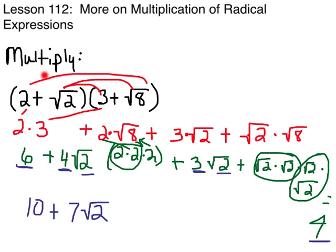So first, we've got 2 times 3, which is 6. And then we've got 2 times the square root of 8, and then square root of 2 times 3, and then the square root of 2 times the square root of 8. So 2 times 3 — that was easy — 6.